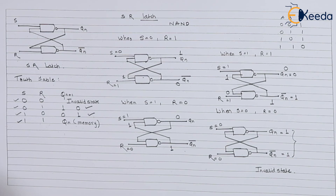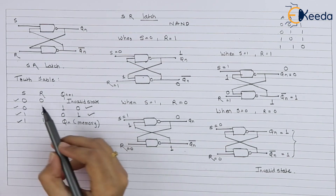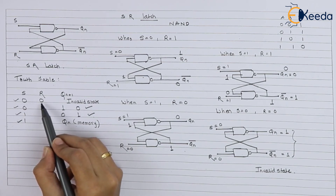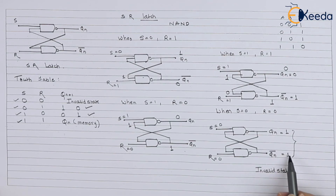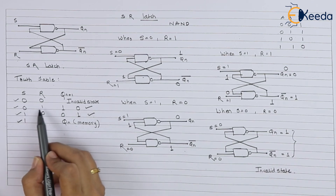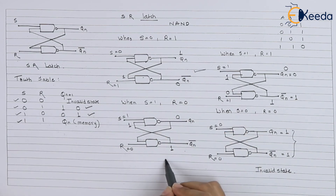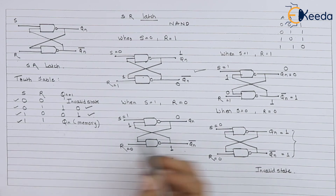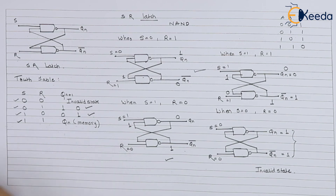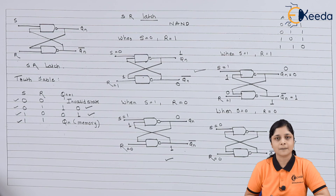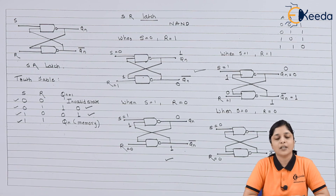So these are the four combinations of SR Latch truth table. For S=0, R=0 we get an invalid state because Qn and Qn bar are not complements. For S=0, R=1 we got output 1,0. For S=1, R=0 we got 0,1. And for S=1, R=1 the outputs retain the previous memory values. We have designed the SR latch using NAND gates, which are universal gates. You can also design it using NOR gates. This is all about SR Latches. Thank you for watching.